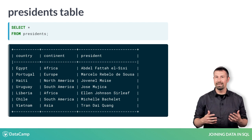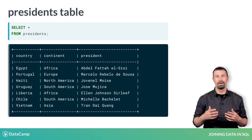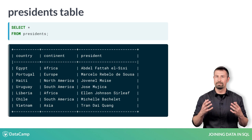Which countries appear in both tables? With small tables like these, it is easy to notice that Egypt, Portugal, Vietnam, and Haiti appear in both tables. For larger tables, it isn't as simple as just picking these countries out visually. So what does the syntax look like for SQL to get the results of countries with a prime minister and a president from these two tables into one?